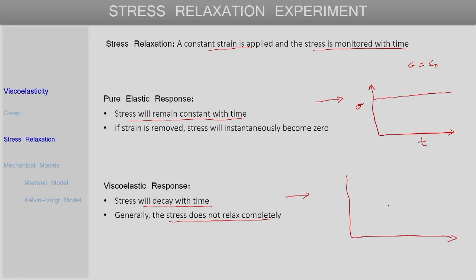If we draw sigma versus time with a constant strain applied as done in a stress relaxation experiment, the stress will initially be at some value and it will decay with time, but even after long times some residual stress might be present. This is in the presence of a constant strain throughout — the stress in the material actually reduces with time, unlike an elastic material where the stress remains constant with time.